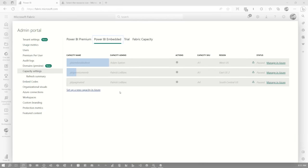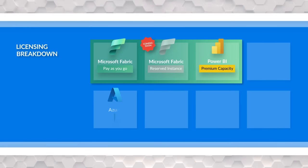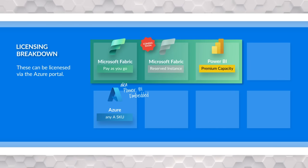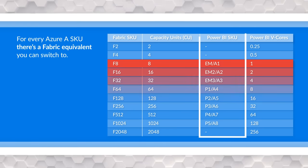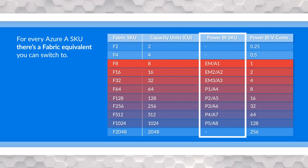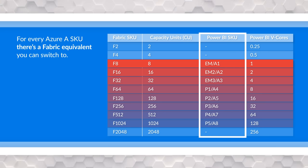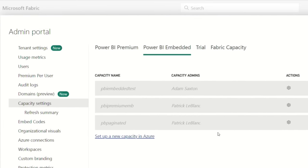We've got Power BI Embedded — these are the A SKUs that were available on the Azure side. These are still available and you can purchase them from the Azure portal for embedding purposes. However, just know that these only provide Power BI capabilities — they do not provide the new Fabric workloads. You either need to be on Power BI Premium Capacities or the new Fabric Capacities in Azure. The nice thing is those Fabric Capacities are available at equivalent A SKU tiering and you can go a little bit below that now. If you are on a Power BI Embedded SKU today, you can just move over to a Fabric Capacity in the Azure portal and you're good to go.